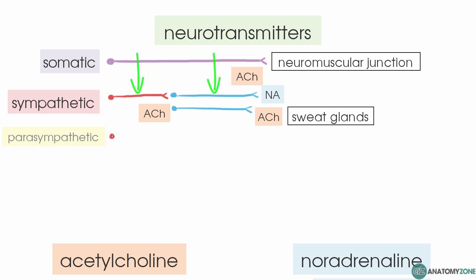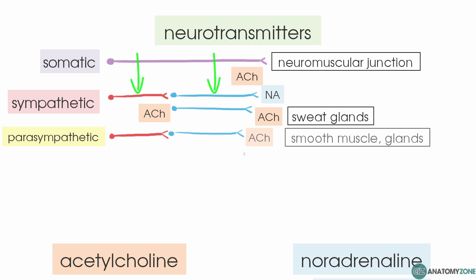In the parasympathetic nervous system, we again have the pre-ganglionic neuron and the post-ganglionic neuron. The post-ganglionic neuron secretes acetylcholine in the parasympathetic nervous system.